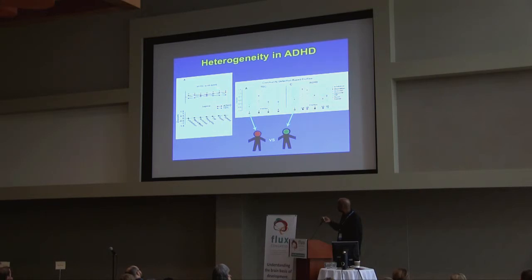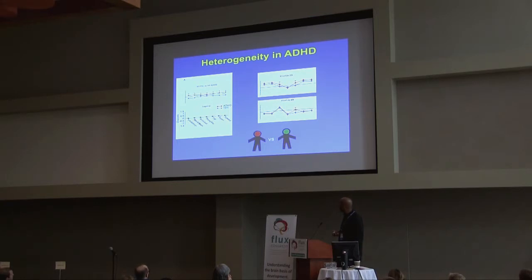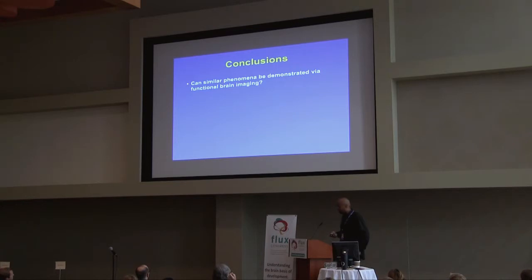If you look at these particular measurements — ADHD versus control, keeping everybody together — what you see is that all the ADHD kids are worse across all these measures. This isn't something new; it's been reported many times. But if you look within their profile, what we identified was that not all the ADHD kids were really atypical in all these measures. Depending on the profile, they were only atypical in a very select few. But of course, I'm a neuroimager, and I was asked to talk about neuroimaging. So the question that immediately crossed our minds was: can similar phenomena be demonstrated via functional imaging?